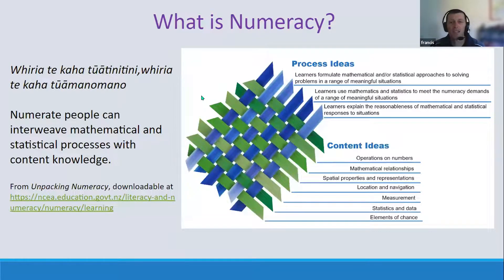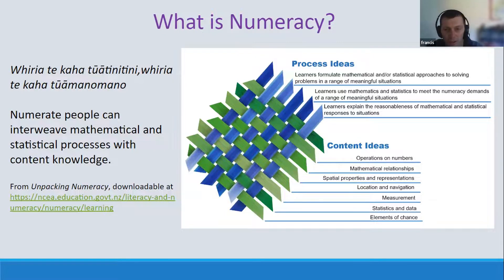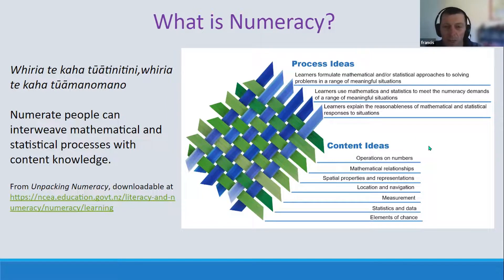Here is the definition of numeracy again, but where it comes in terms of the matrix for the numeracy standard and what's expected of students — this co-requisite for NCEA. There are three process ideas, and I'm going to make an assumption that many of you may not have seen much of this, so I apologize if you know this really well. I will go through this because the process ideas and the content ideas are pivotal for the knowledge students have to have in order to pass the assessment task.